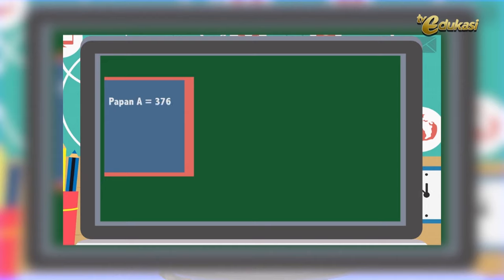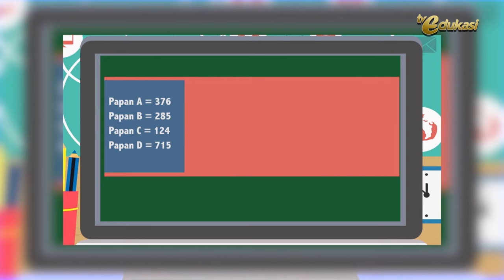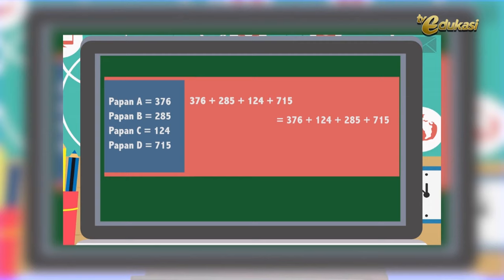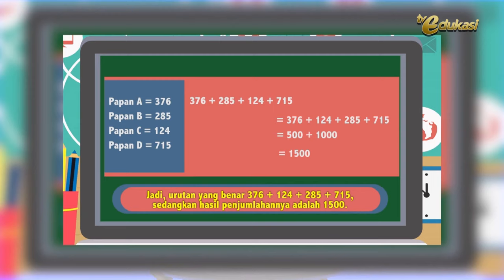Solusi. Informasi: papan A sama dengan 376, papan B sama dengan 285, papan C sama dengan 124, papan D sama dengan 715. Langkah-langkah: 376 ditambah 285, ditambah 124, ditambah 715 — sama dengan 376 ditambah 124, tambah 285, ditambah 715. Sehingga jumlahnya mudah: sama dengan 500 ditambah 1000, sama dengan 1500. Kesimpulan: urutan agar lebih mudah menjumlahkan adalah 376 ditambah 124 ditambah 285 ditambah 715, dan hasil penjumlahannya adalah 1500.